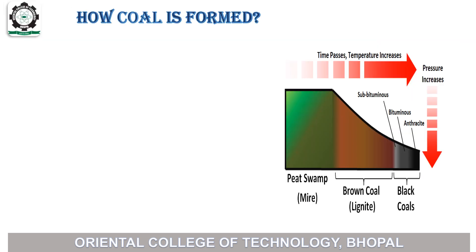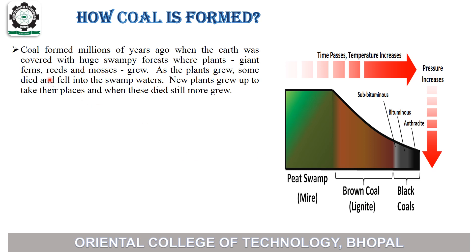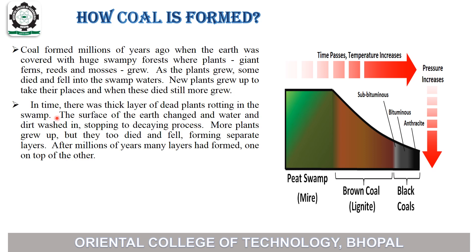How coal is formed. Coal was formed millions of years ago when the earth was covered with huge swampy forests where plants, giant ferns, reeds, and mosses grew. As the plants grew, some died and fell into the swamp waters. New plants grew up to take their places, and when these died, still more grew. In time, there was a thick layer of dead plants rotting in the swamp.